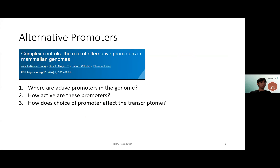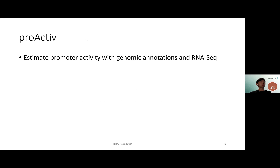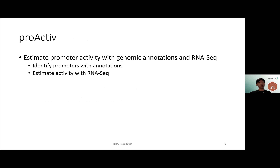In particular, we want to answer a few questions. Firstly, we want to be able to identify the promoters in the genome. Secondly, we also want to quantify how active these promoters are. And lastly, we want to ask how does the choice of promoter affect the transcriptome. To answer these questions, ProActive uses data from both genomic annotations and RNA-seq data. Genomic annotations are first used to identify promoters, and RNA-seq data is then used to estimate the activity at each annotated promoter.